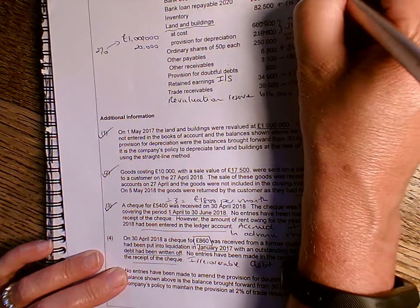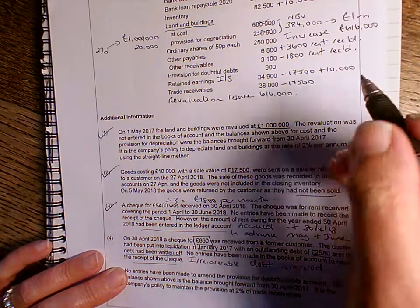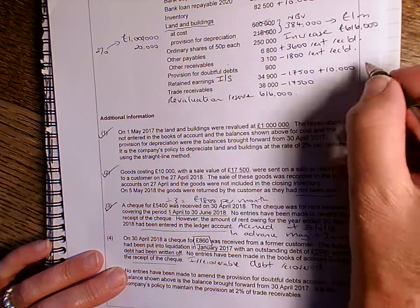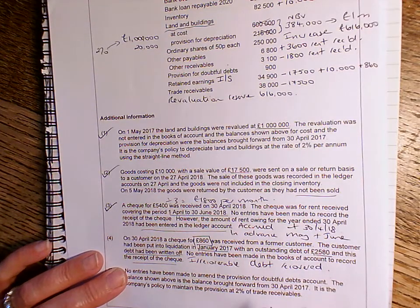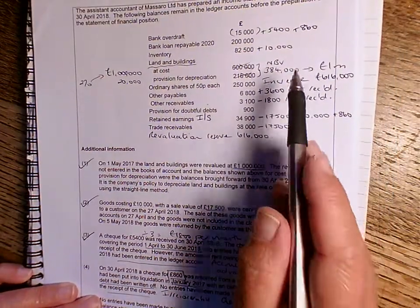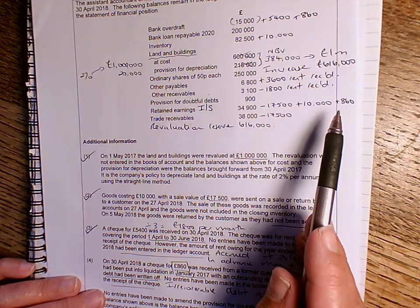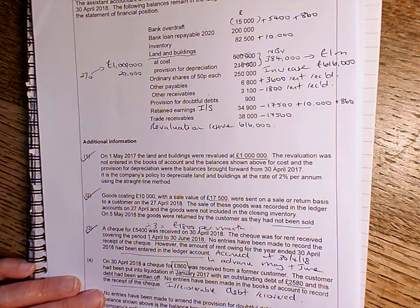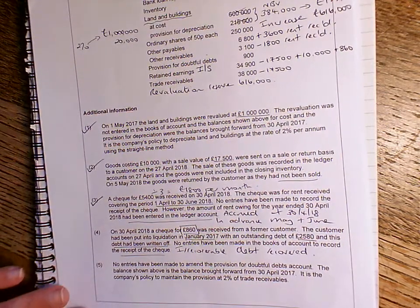So again, we're going to have to pay that into the bank, £860. And we're also going to add it to retained earnings, because that's going to increase our profit by £860. So you can see that I've paid it into the bank, £860 there. And I've also added it to retained earnings. So again, that's going to reduce the overdraft.